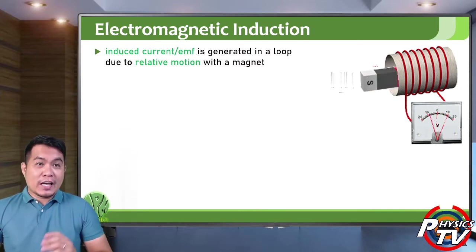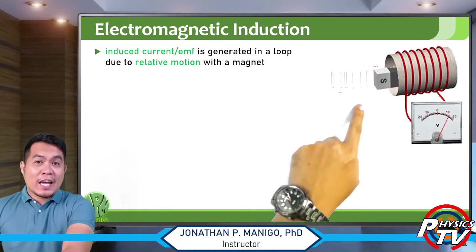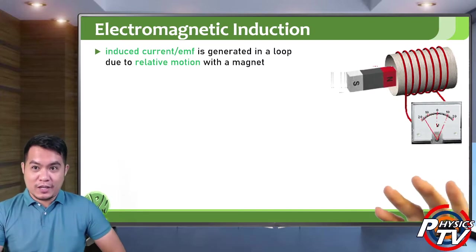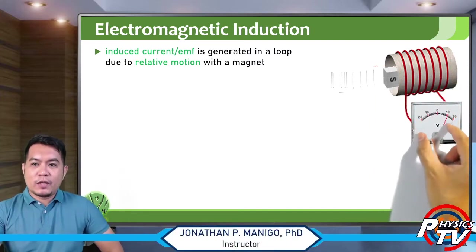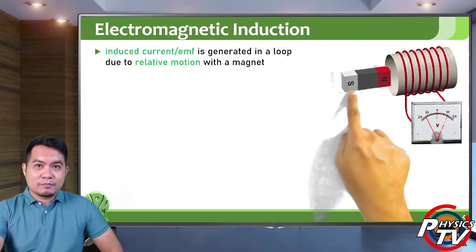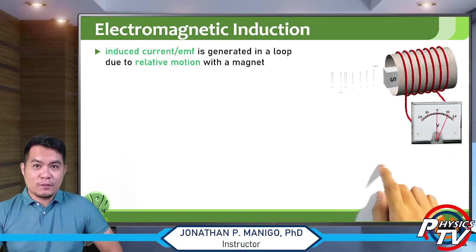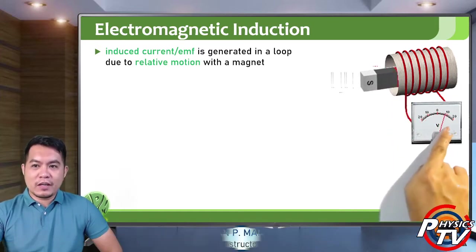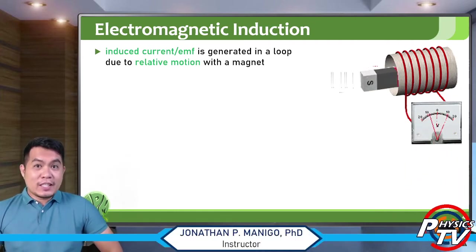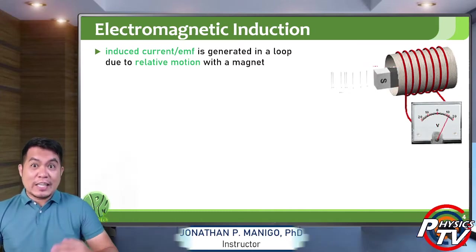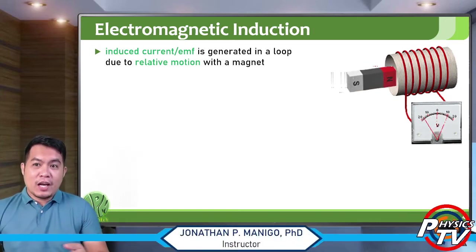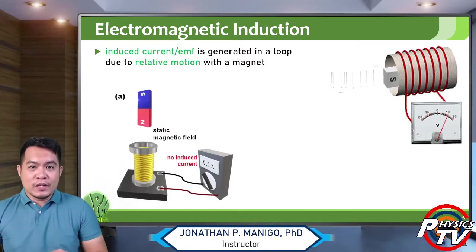This is due to a relative motion with a magnet, such as what is shown in this animation here. You have a coil of wire — essentially a solenoid — with no current yet, just connected to a voltmeter. What happens is when you move a magnet with respect to this coil of wire, you will notice that there is an induced voltage or induced EMF. That is the phenomenon called electromagnetic induction.